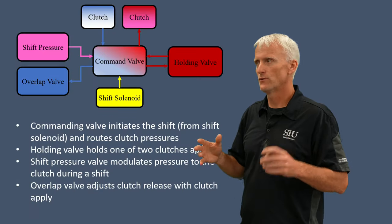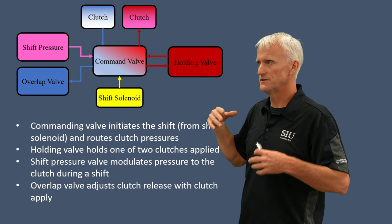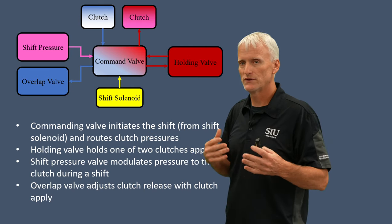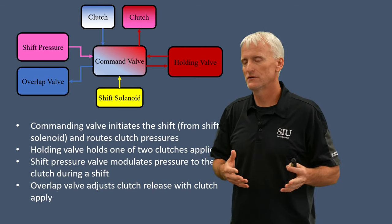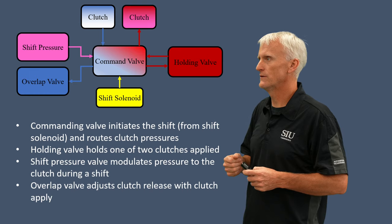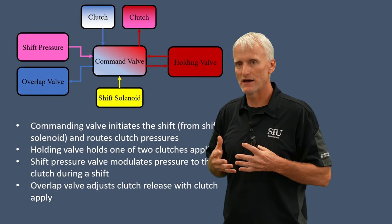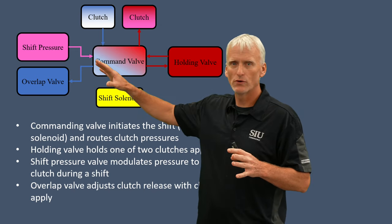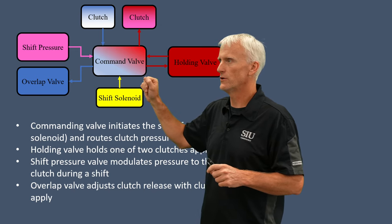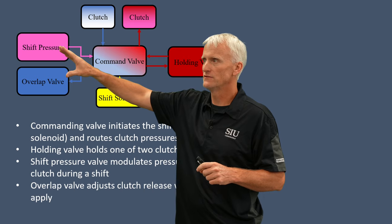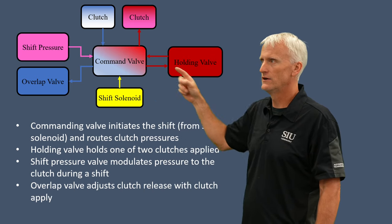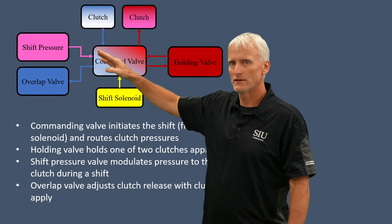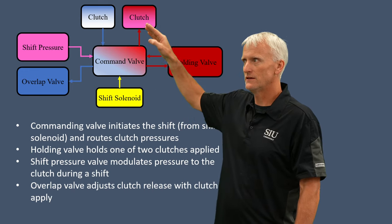Take a look at this chart — it shows the direction of control for a lot of these components. I've got those four valves: shift pressure, overlap valve, command valve, and holding valve. There are also the two clutches — one depicting the releasing clutch and one depicting the applying clutch. The shift solenoid is what starts this whole process.